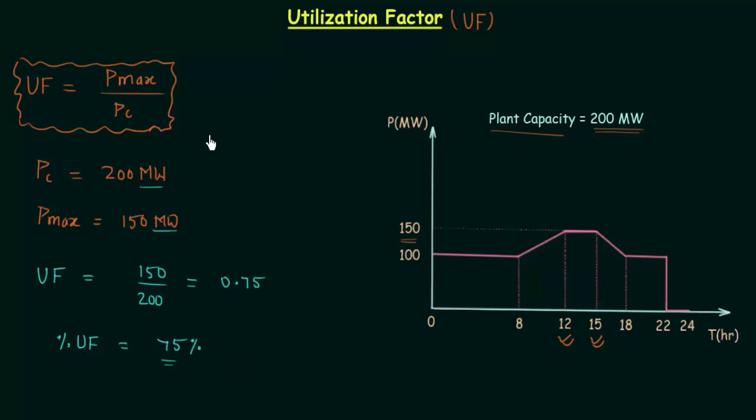In ideal cases, utilization factor is equal to 1. This means we are utilizing the plant 100%. And in practical cases, utilization factor is always less than 1.